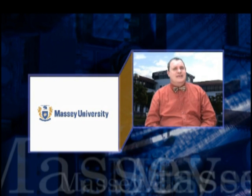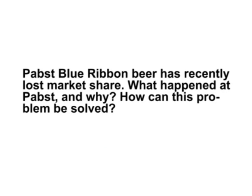Here's another example of how task words may not always be easy to identify. Pabst Blue Ribbon Beer has recently lost market share. What happened at Pabst and why? How can this problem be solved? The crux of this question asks you to assess the cause of the problem. Once you've discussed what happened and why, the second part asks you to evaluate the situation and give recommendations to solve the problem.